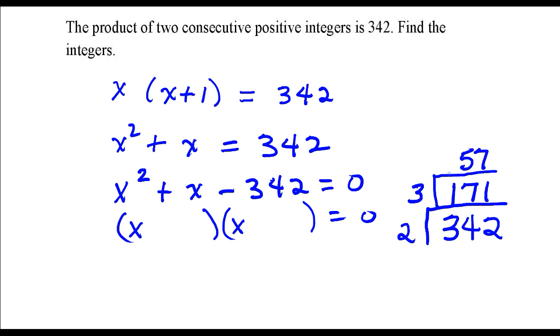And that's going to be 57. 57 is divisible by 3. That's 19. And now I can stop there because the quotient is a prime number. So 342 is 2 times 3 times 3 times 19.